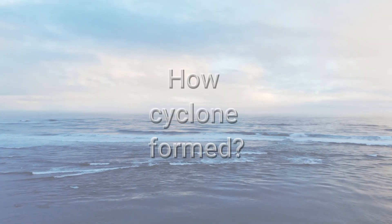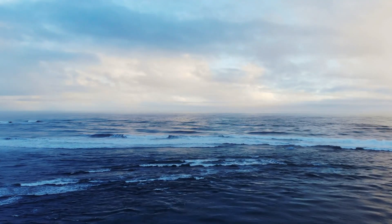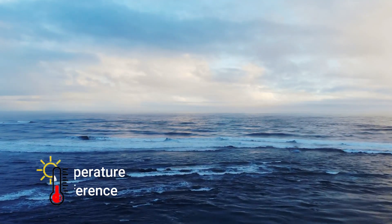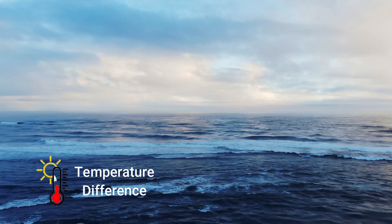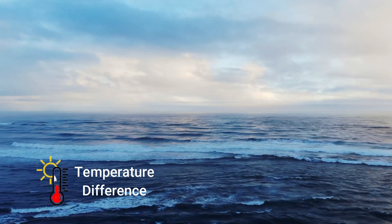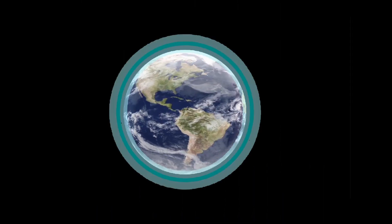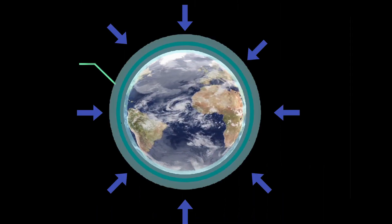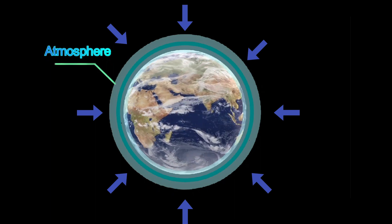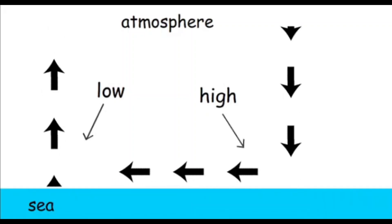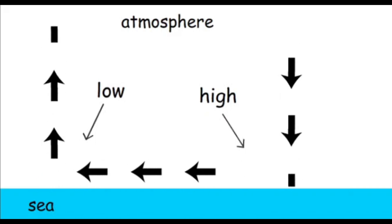Now let us see how cyclones are formed. Cyclones are formed due to temperature differences, which cause an imbalance of air pressure and form a storm. By the way, air pressure is nothing but the pressure within the atmosphere of Earth. Always remember, air flows from higher pressure to low pressure.